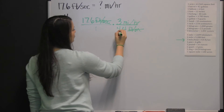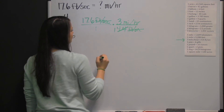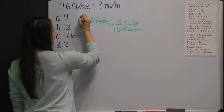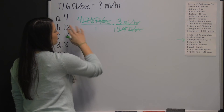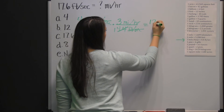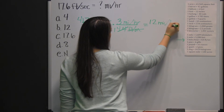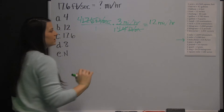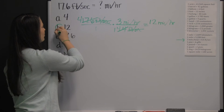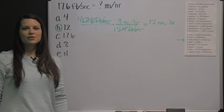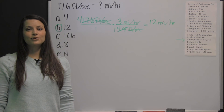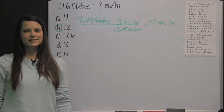Four and 4 tenths divided by 4 and 4 tenths is 1. Seventeen and 6 tenths divided by 4 and 4 tenths is 4. Then we just multiply straight across: 4 times 3 miles per hour is 12 miles per hour, and the denominator is one. So there's your answer: 12 miles per hour. There's an example of how to work one of the conversion problems from the mathematical usage section on the CAST test.